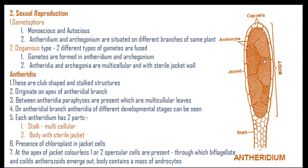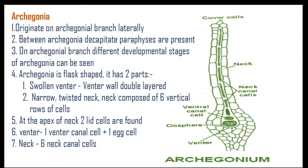At the apex, the jacket cells have transparent colored cells called cap cells with opercular cells. From that location the antheridium can split into two halves and biflagellate antherozoids are liberated. The archegonia originate on the archegonial lateral branch; between archegonia, decapitate paraphyses are present.